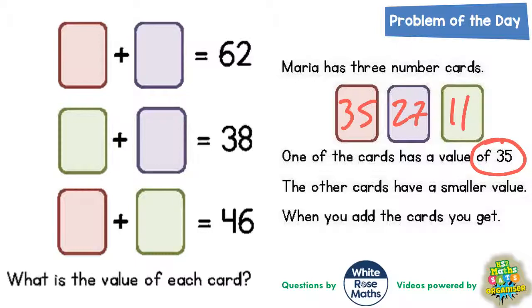Now we have actually finished the question, but it seems that we got lucky because we decided to try the red one being 35 first. But what would have happened if we'd tried the purple one being worth 35? Well, let's see.